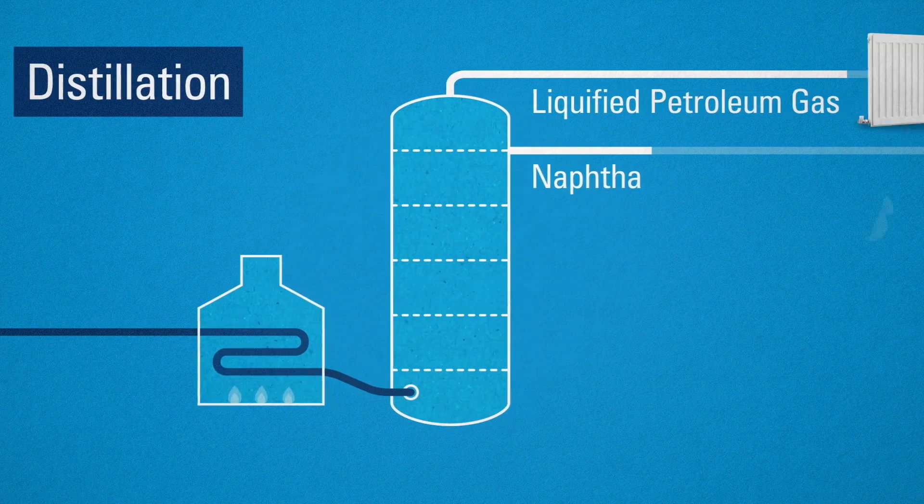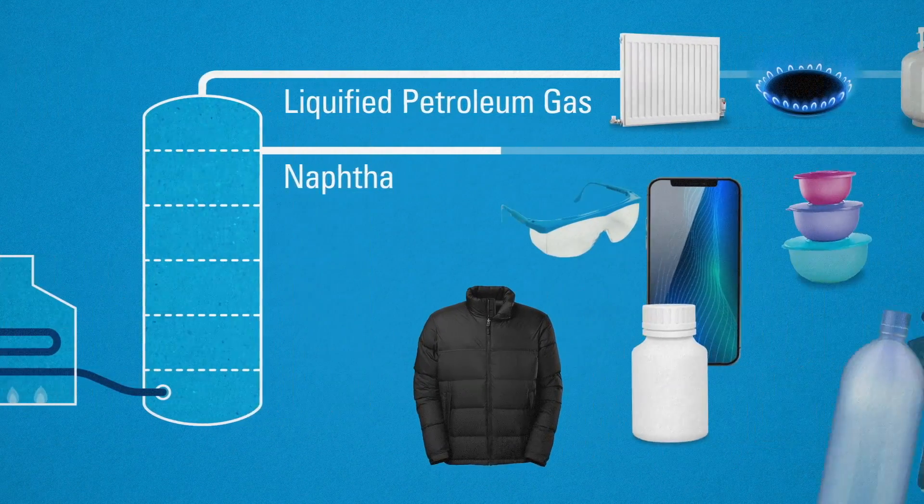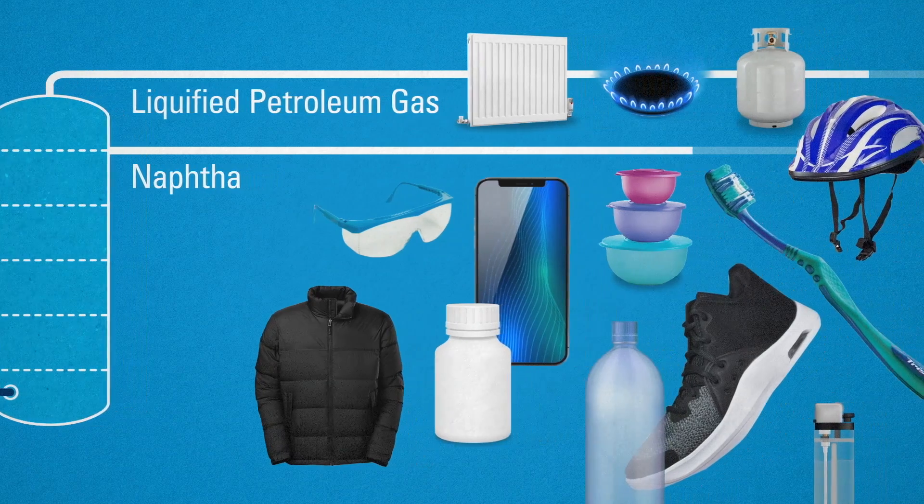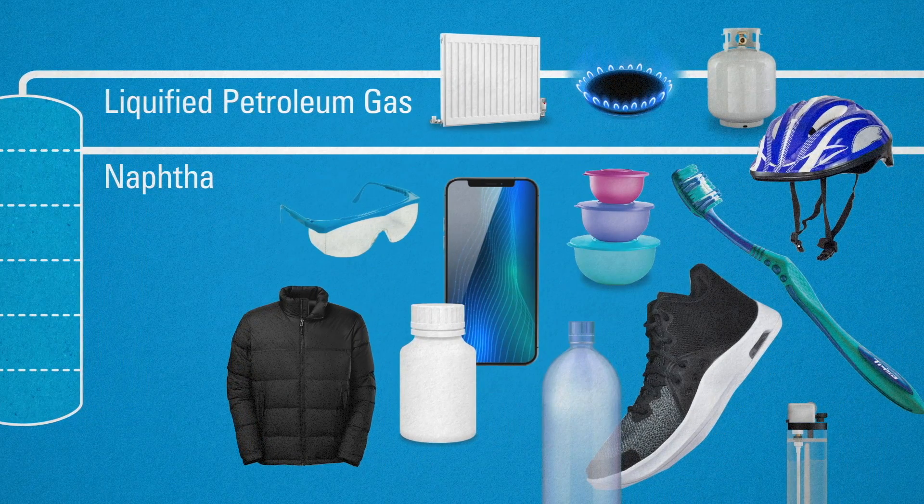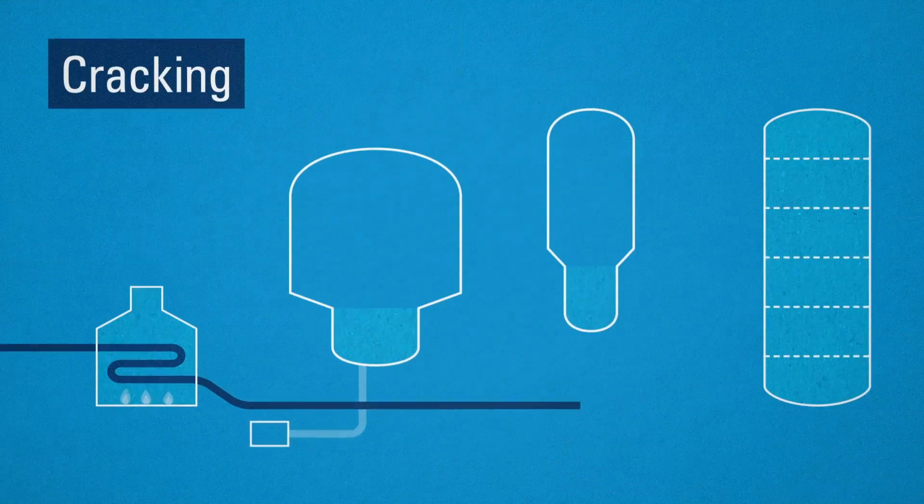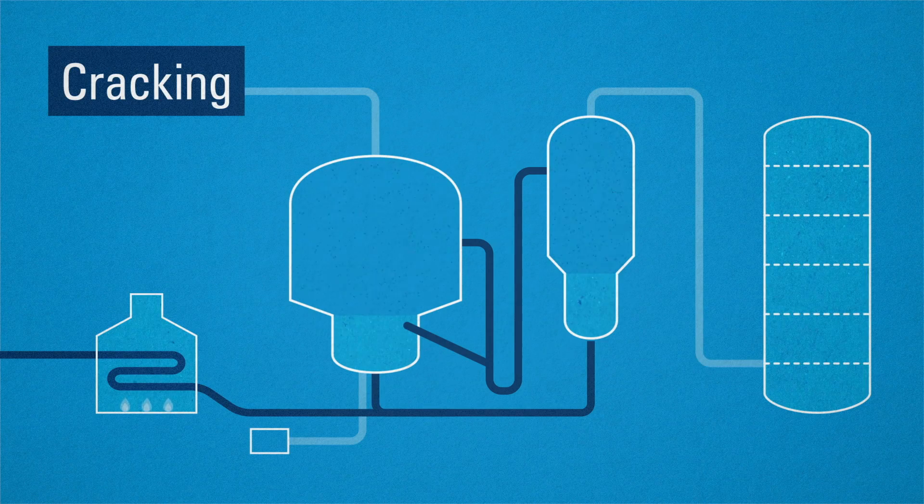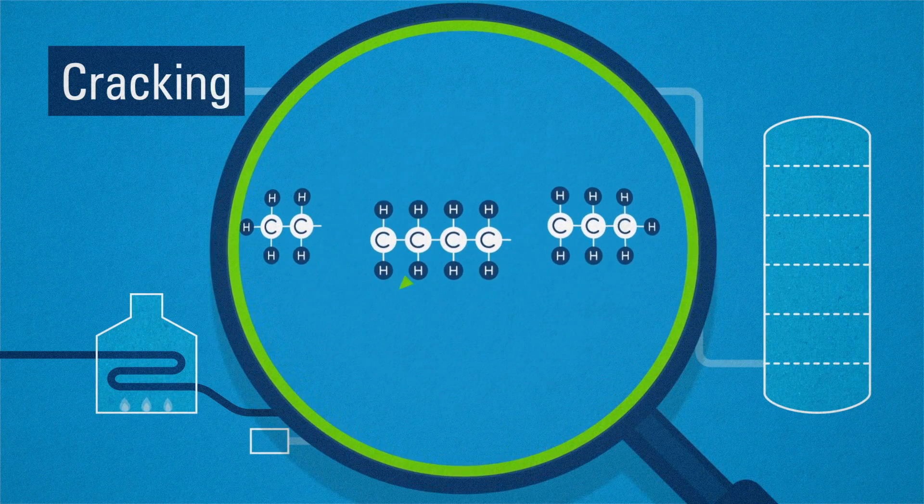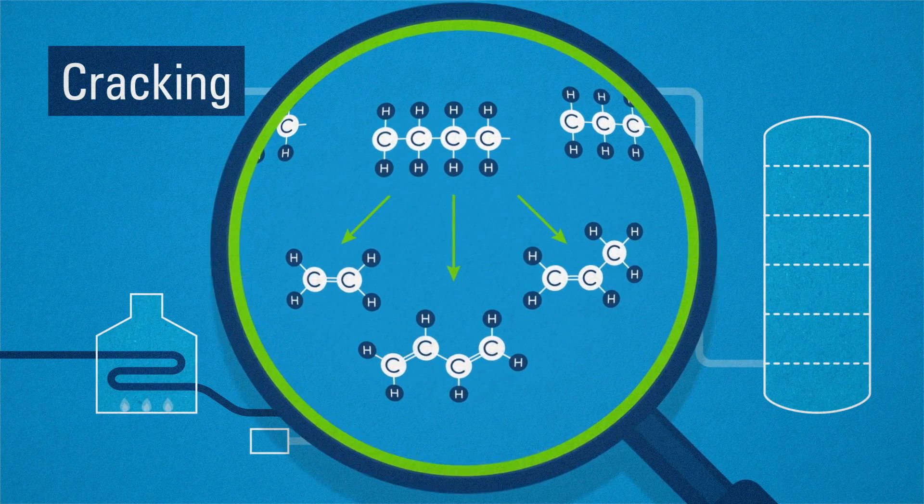The latter two form the basis for what is in effect an infinite array of applications. But for this, naphtha and liquid gas first need to be cracked in order to release the valuable hydrocarbons. Heat breaks down the bonds, resulting in short chain molecules.